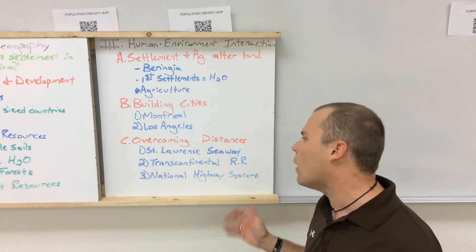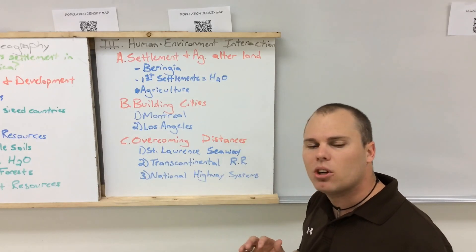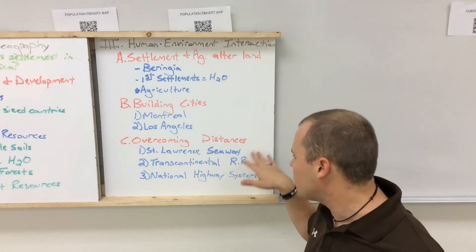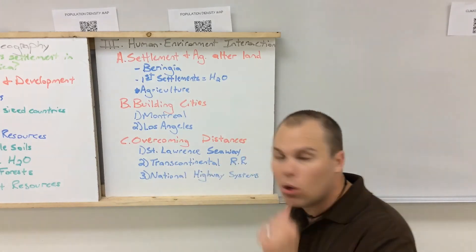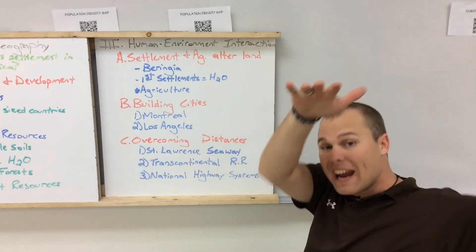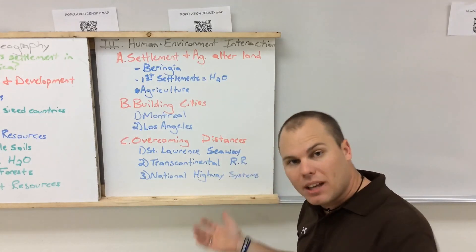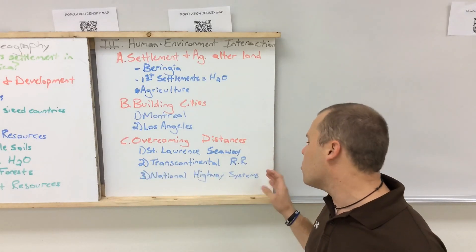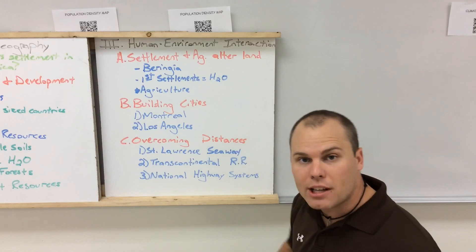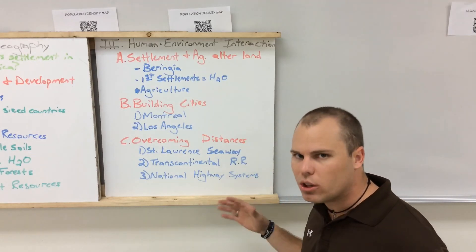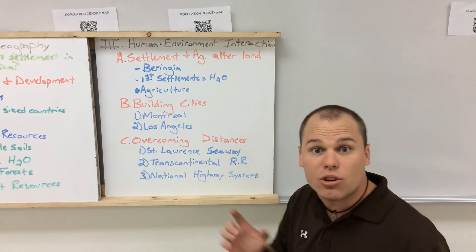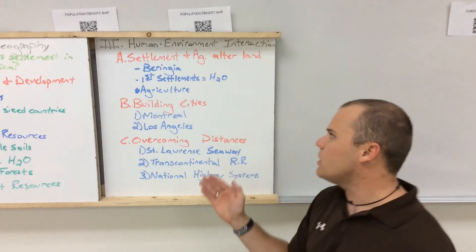To overcome distances, the Saint Lawrence Seaway in Canada uses a lock system similar to the Panama Canal — sea level is higher in some parts than near the coast, so boats use locks to raise or lower themselves to navigate from the coast into Canada. Transcontinental railroads have been built across both countries to improve transportation. Additionally, there is a domination of national highway systems, roads, and interstates that have made transportation easier throughout the region.